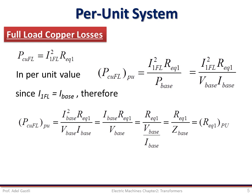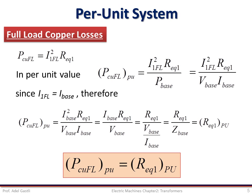we can obtain the following equation which shows that the full load copper losses are equal to R_equivalent 1 in per unit. Hence, we can conclude that the transformer resistance expressed in per unit form also represents the full load copper losses in per unit form.